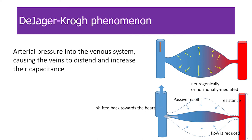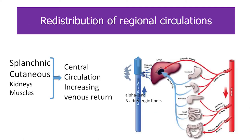When blood flow through the resistance vessels increases, these compression vessels stress and pool blood in those capacitance vessels, leading to compromise. When constriction of resistance vessels increases and blood flow decreases, this elastic recoil of the capillary wall pushes the blood downstream — this is known as the capillary flow phenomenon. The redistribution of regional circulation, splanchnic circulation, is most important, and kidney and muscle circulations are also very important.